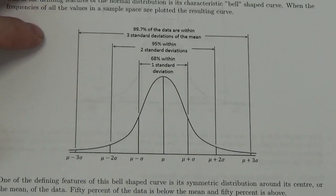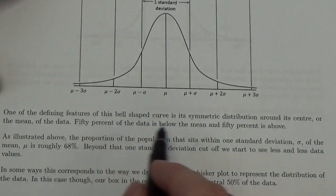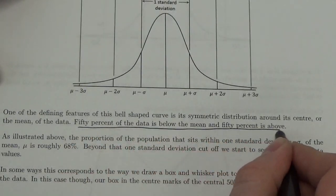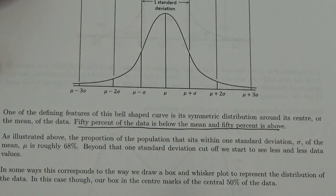Now, one of the things that's really interesting about this, this bell-shaped curve is the symmetry. 50% of the data is below the mean and 50% is above the mean. Now, that should start to kind of ring a bell here.